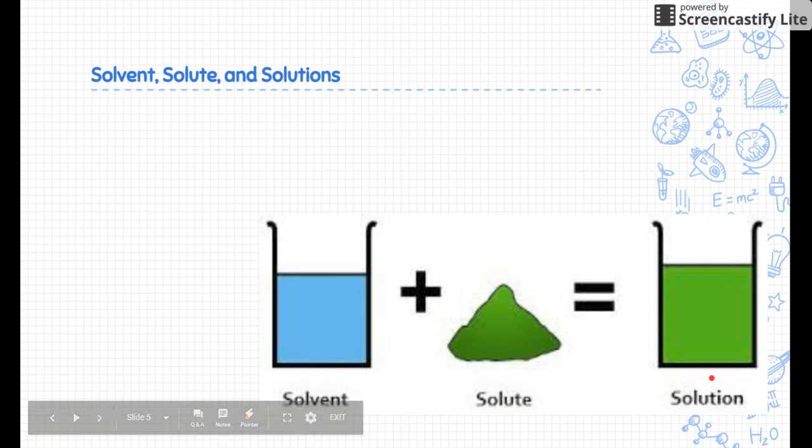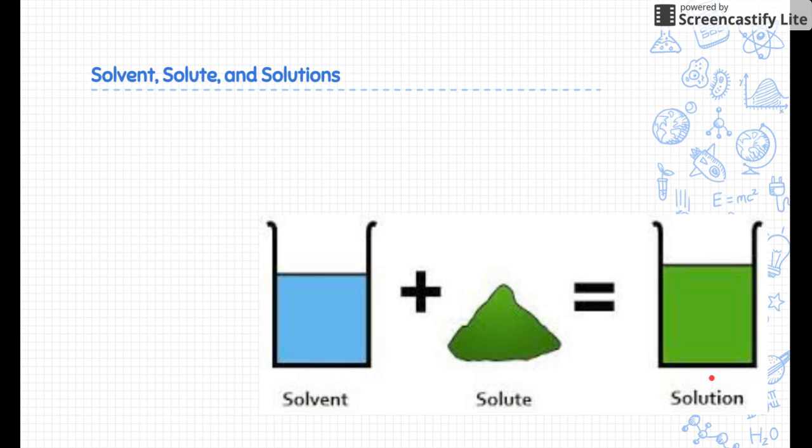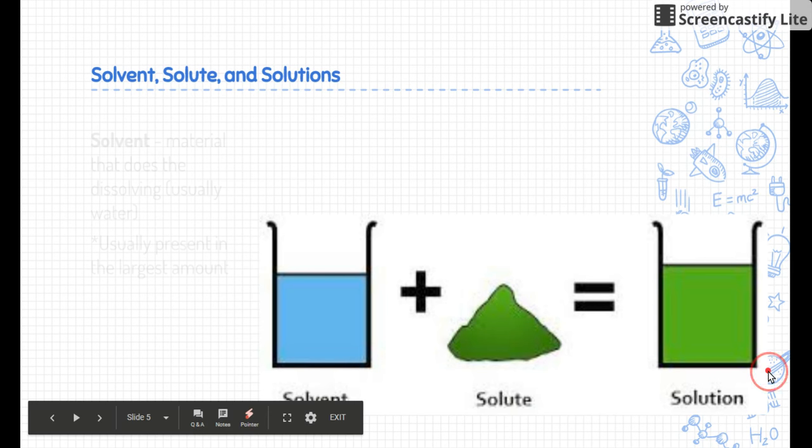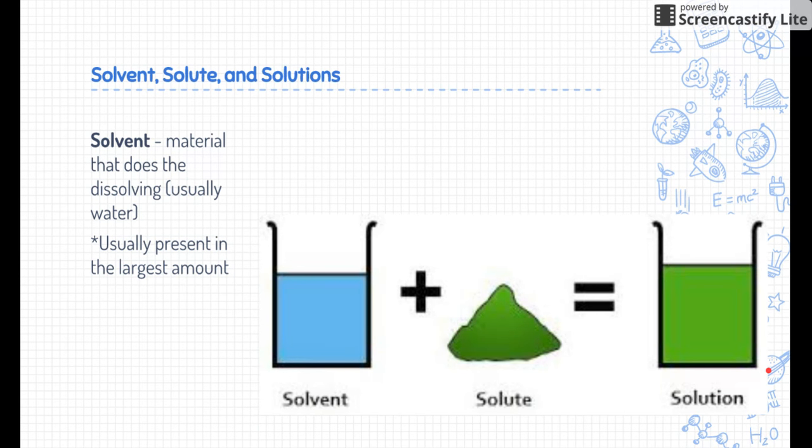You need to know about three terms: solvent, solute, and solution. I really like this picture here and almost recommend that you draw the picture before even writing any definition. The solvent is the material that does the dissolving, usually water because water is a universal solvent, but it could be any other liquid. Usually this liquid is present in the largest amounts, and that's one of the key indicators to know that's the solvent.